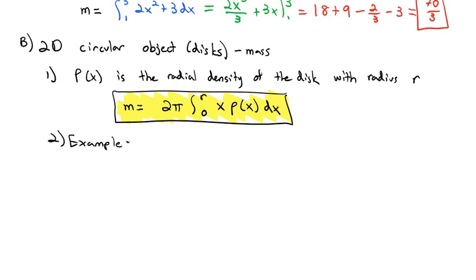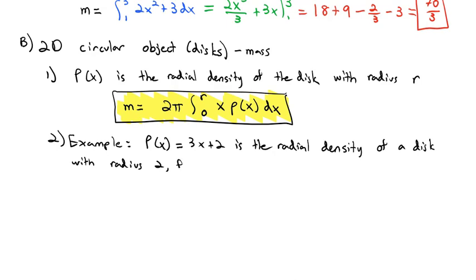For example, if ρ(x) = 3x + 2 is the radial density of a disk with radius 2, we're going to find the mass. Using our equation, mass is 2π times the integral from 0 to 2 of x times our ρ equation 3x + 2 dx, or distributing that x through, we're really taking the integral of 3x² + 2x.